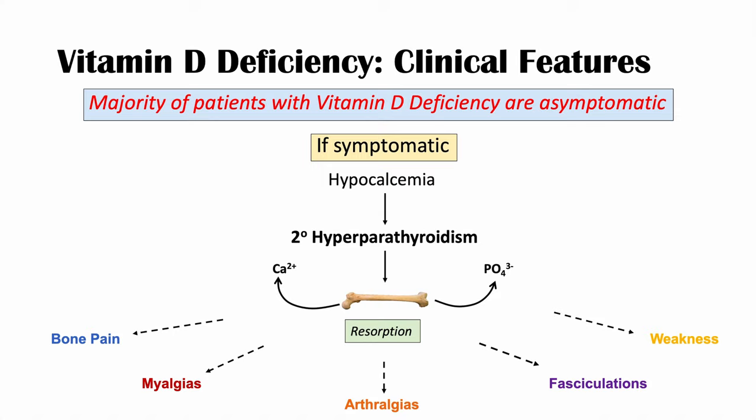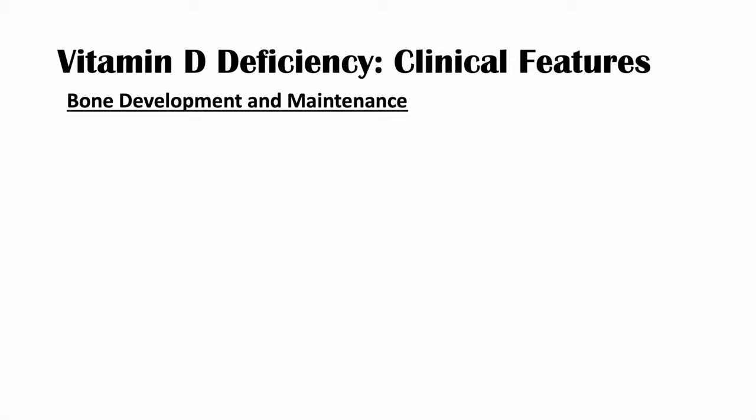Other clinical features relate to bone development and maintenance. Hyperparathyroidism causing bone resorption can lead to osteomalacia — softening of bone — which we can see in both children and adults. If there's vitamin D deficiency in children where they're not able to develop and form their bones properly, we can get rickets, which occurs in children.